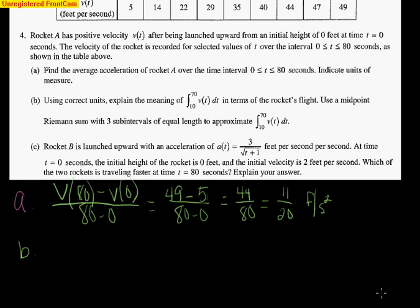Letter B. Letter B wants to know the meaning of the integral, the definite integral from 10 to 70 of V of t in terms of the rocket's flight. We're going to do a midpoint Riemann sum with three subintervals. Now, the first thing they want is an explanation.